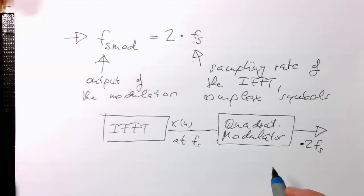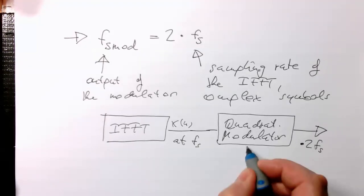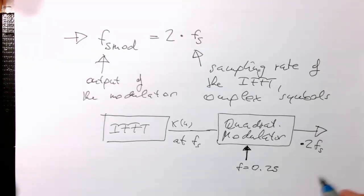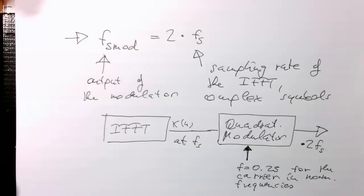The interesting thing now is which frequency are we using here for our quadrature modulator. In relative frequencies, this runs at 0.25 for the carrier in normalized frequencies. This means that one period is four samples.